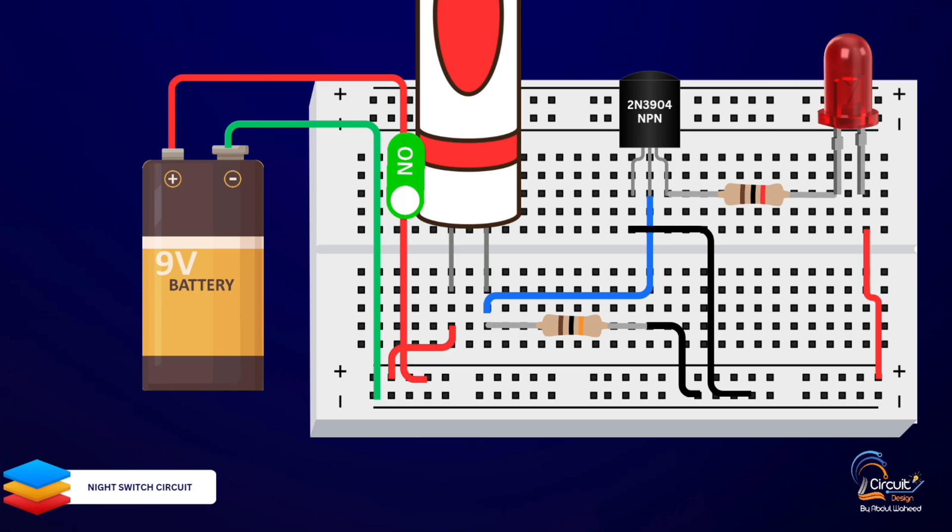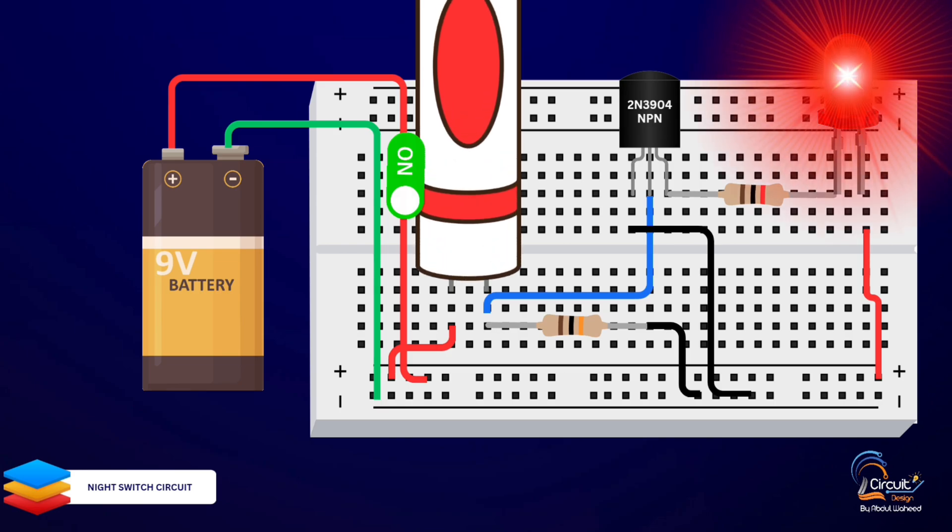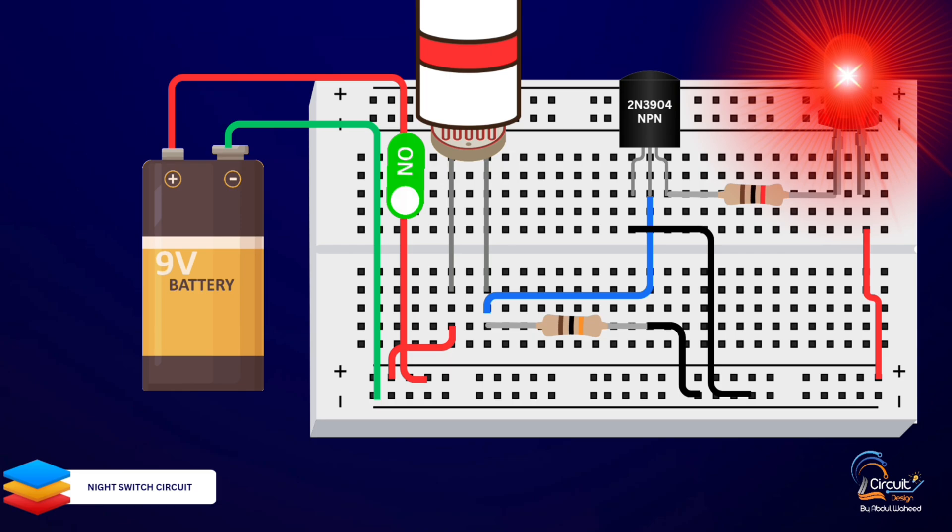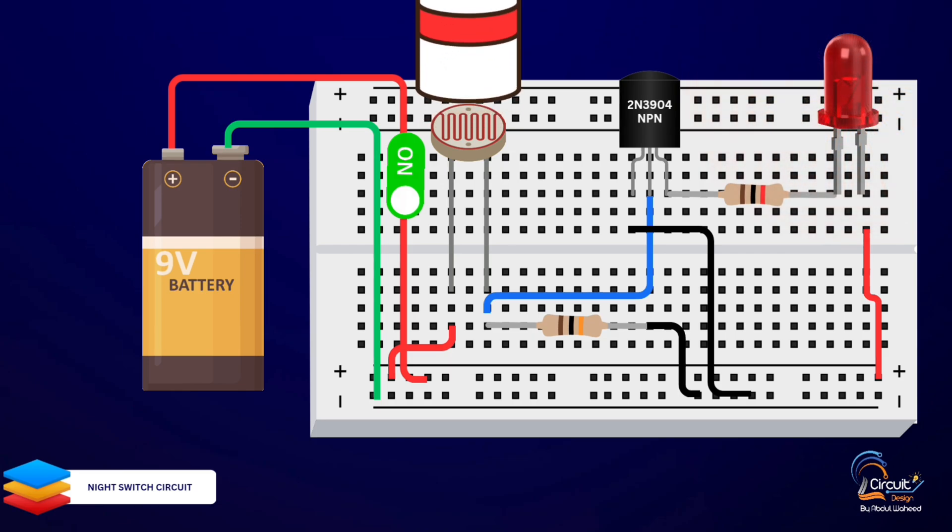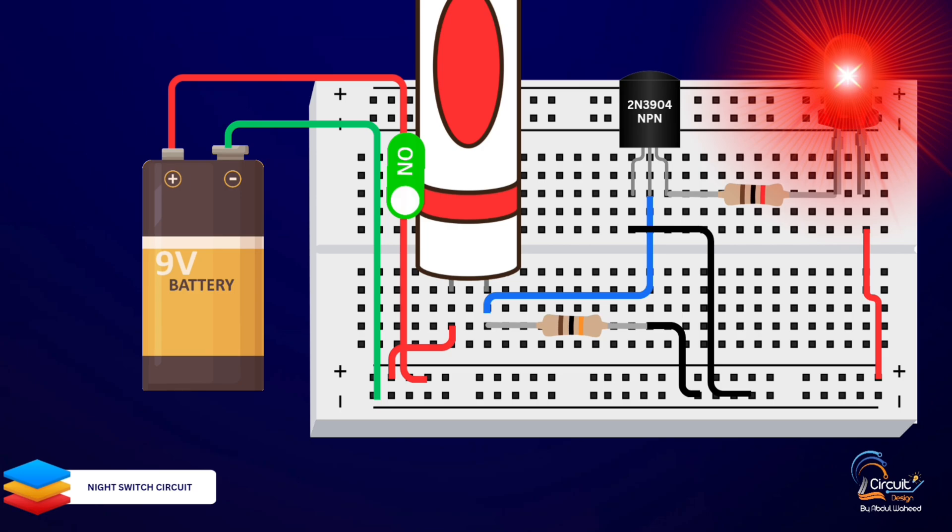Today, we're diving into a fun and practical electronics project: building a night switch circuit using a light dependent resistor and a 2N3904 transistor. This circuit will automatically turn on an LED when it gets dark. Let's get started.